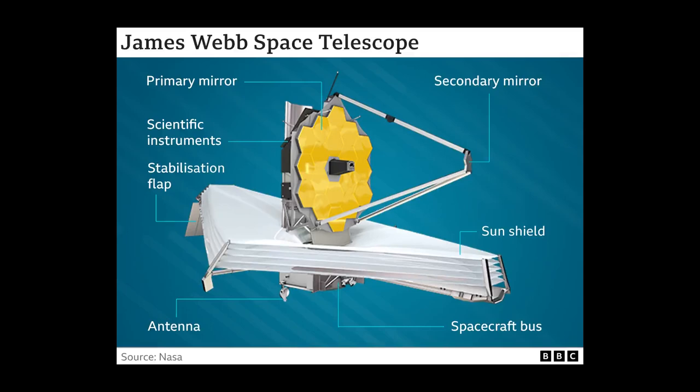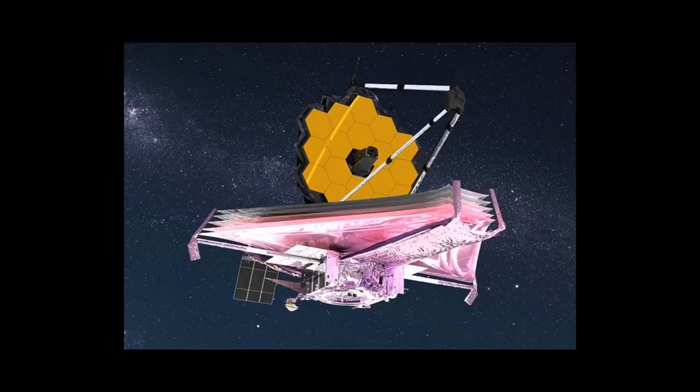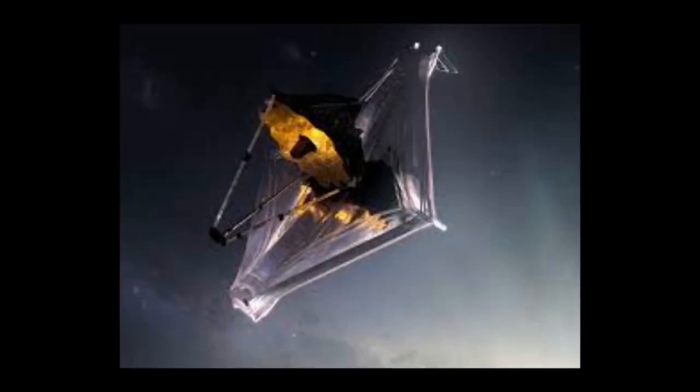JWST's primary mirror consists of 18 hexagonal mirror segments made of gold-plated beryllium, which is combined to create a 6.5-meter diameter mirror, aiding the JWST with a light-collecting area of about 25 square meters.